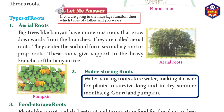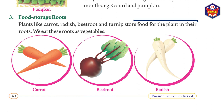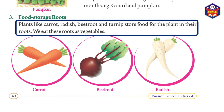Two: water-storing roots. Water-storing roots store water, making it easier for plants to survive long dry summer months — for example, gourd and pumpkin. Three: food-storage roots. Plants like carrot, radish, beetroot, and turnip store food for the plant in their roots.